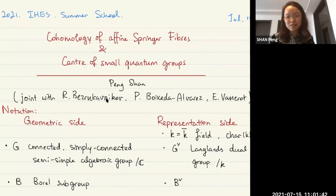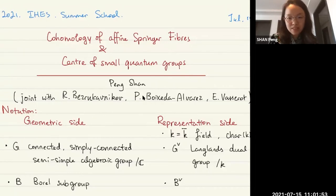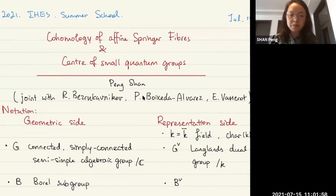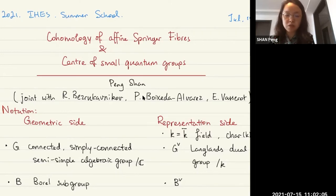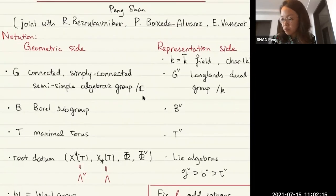Thanks to all the organizers for the invitation. Today I'll talk about a joint work in progress with Roman Bezrukavnikov, Pablo Boixeda Alvarez, and Clas Löfwall. As you can see from the title, there will be two parts in this talk: a geometric side concerning cohomology of affine Springer fibers, and a representation side for representations of quantum groups.